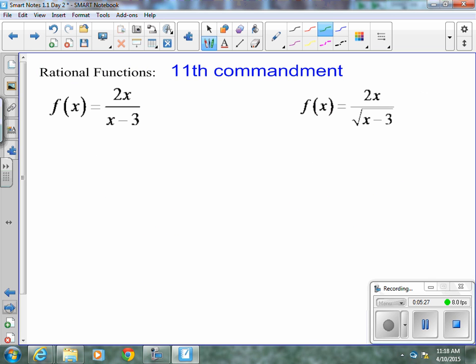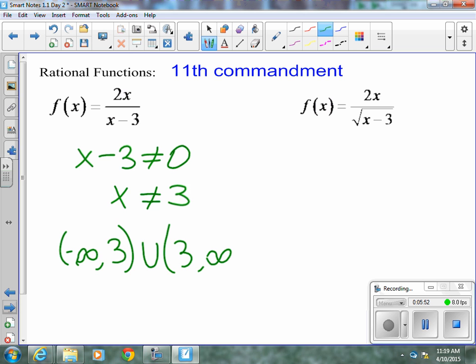Now, when we get to functions that have denominators, like the two on the video now, we know that our denominator can't equal 0. So, x minus 3 is not allowed to be 0, which means x is not allowed to be 3. So, our domain is everything else. Negative infinity to 3 with a parenthesis because I'm not including the 3, and 3 to infinity.